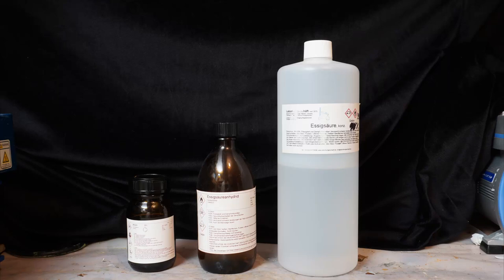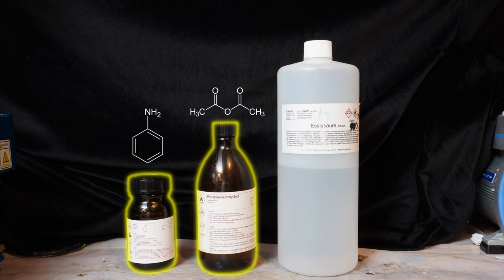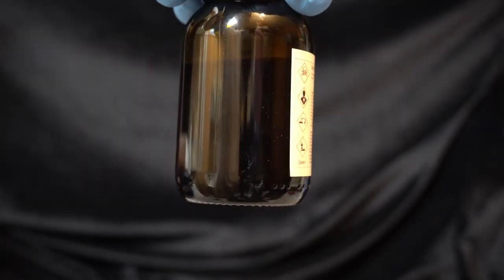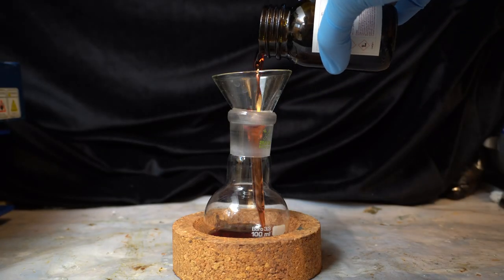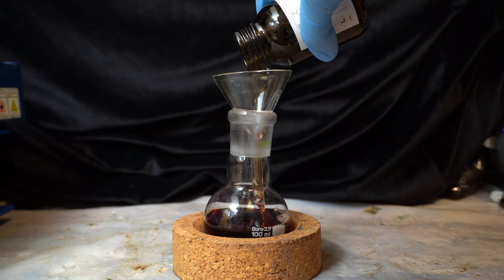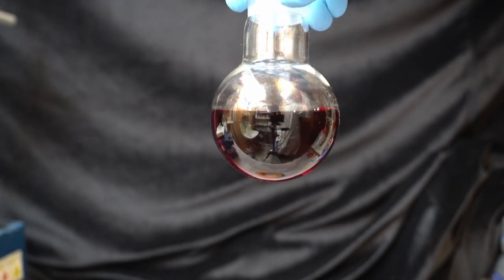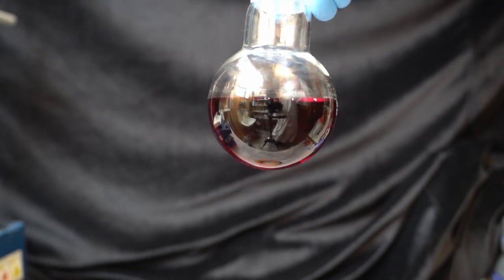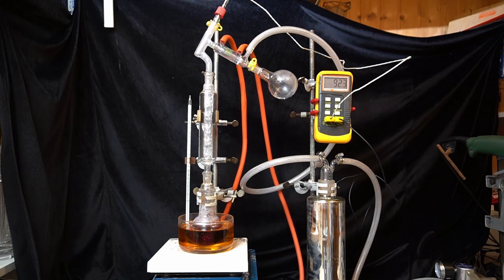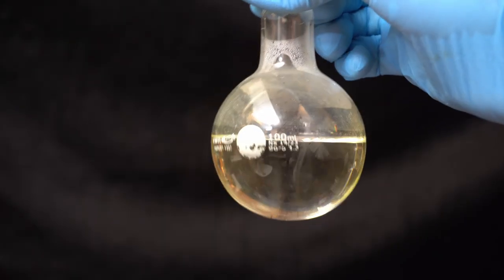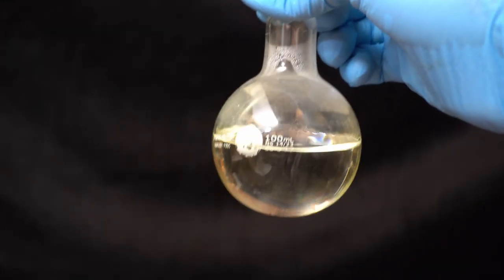Three chemicals are needed for this preparation: aniline, acetic anhydride, and glacial acetic acid. The aniline has again oxidized during storage and taken on a dark red color. This isn't a big deal for this kind of reaction and I could just use it like this, but I need it for another project as well, so I'm going to do a quick vacuum distillation. After that's done, we can start with the preparation of acetanilide.